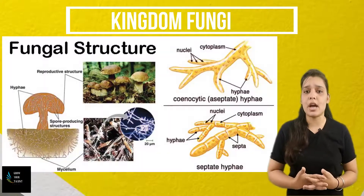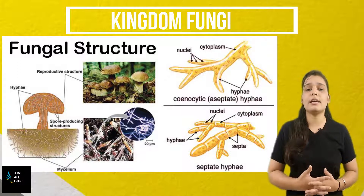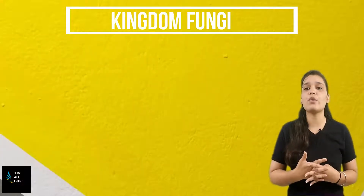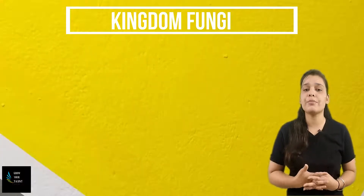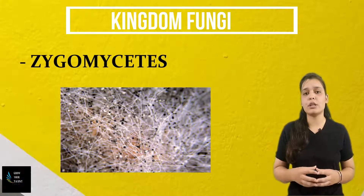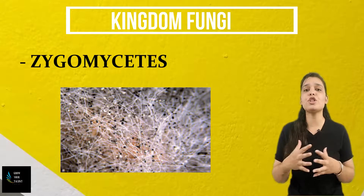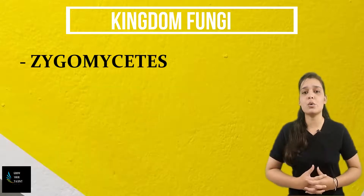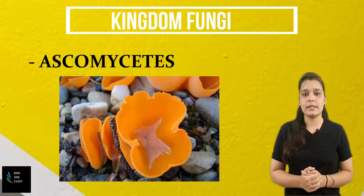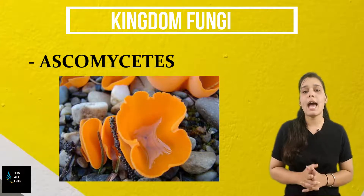Fungi are categorized into four types on the basis of spore formation. The first type is Zygomycetes — these cells are formed by the fusion of two different cells and the sexual spores are known as zoospores. The second type is Ascomycetes, known as the sac fungi, and the sexual spore is known as the ascospore.